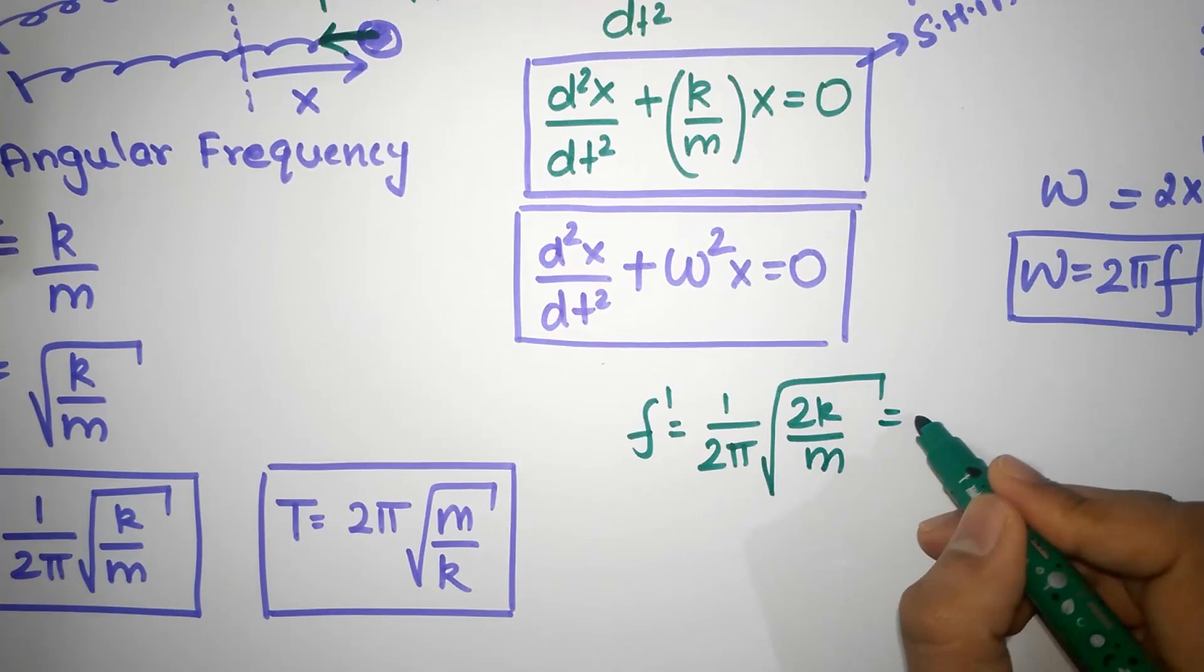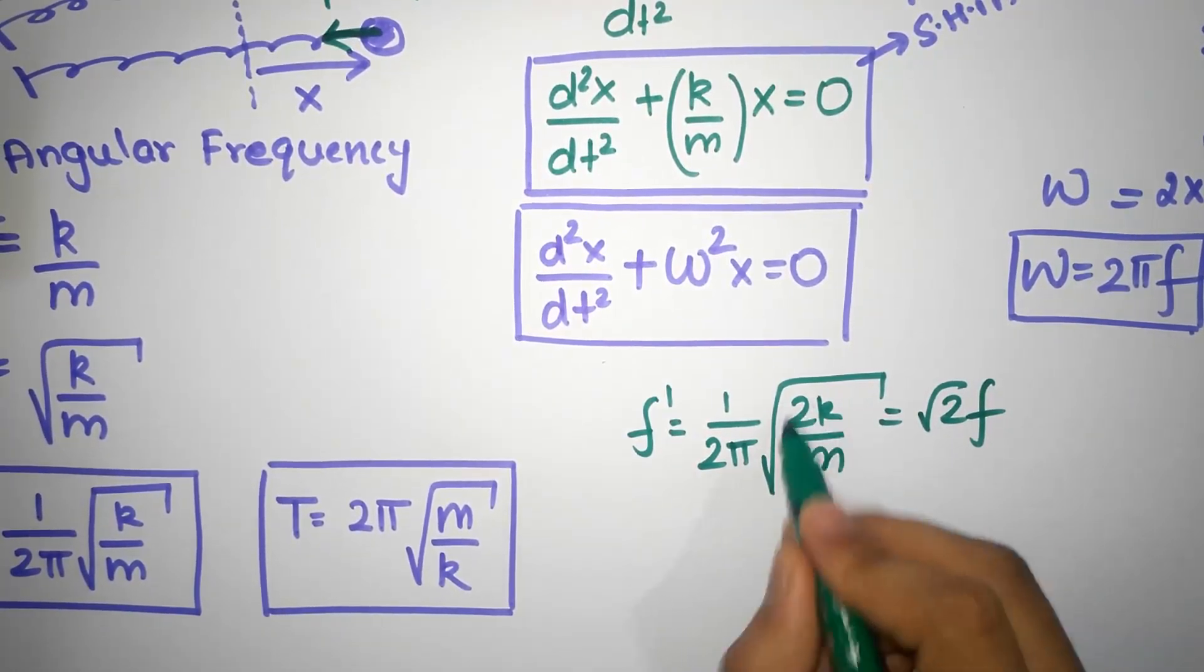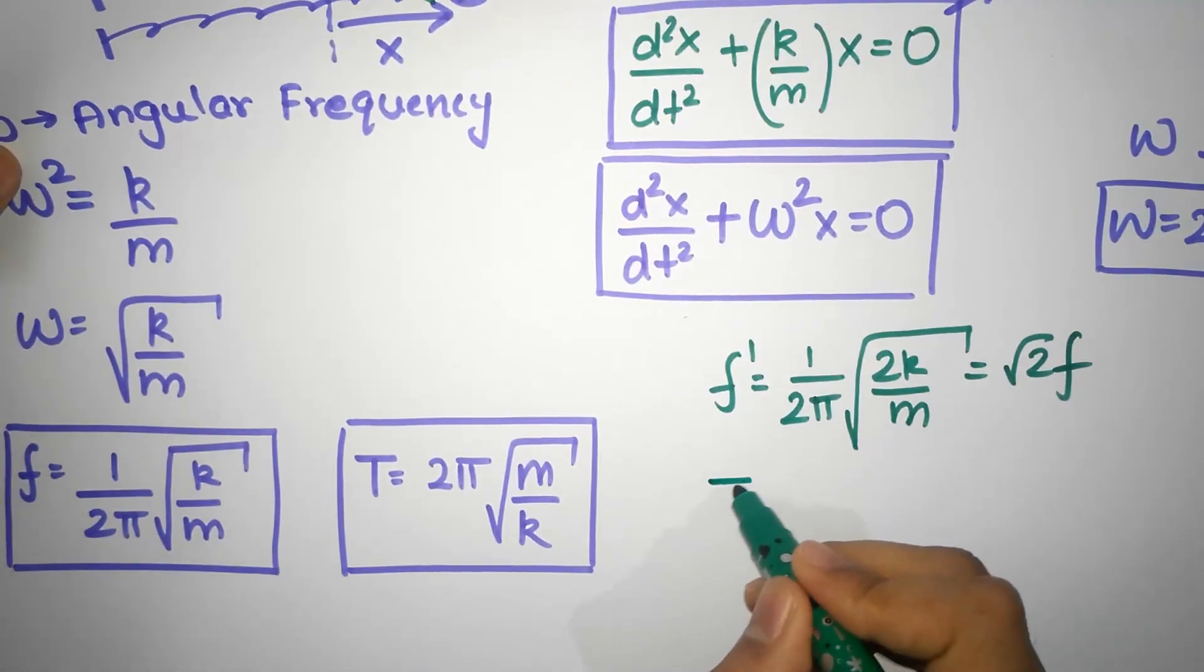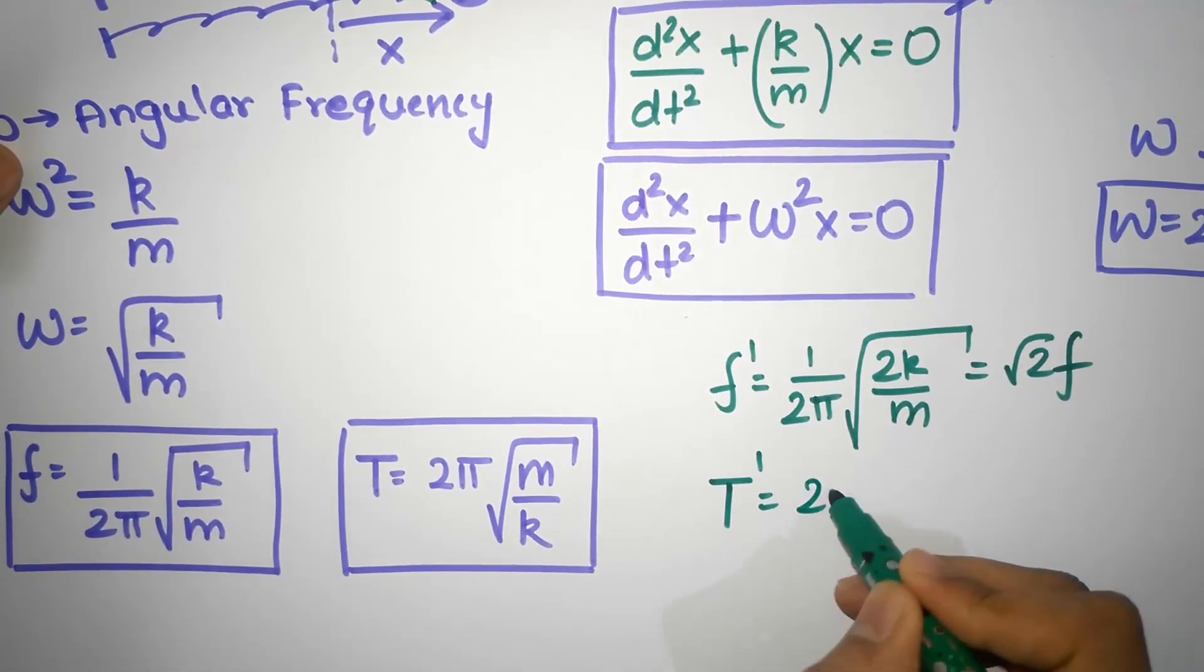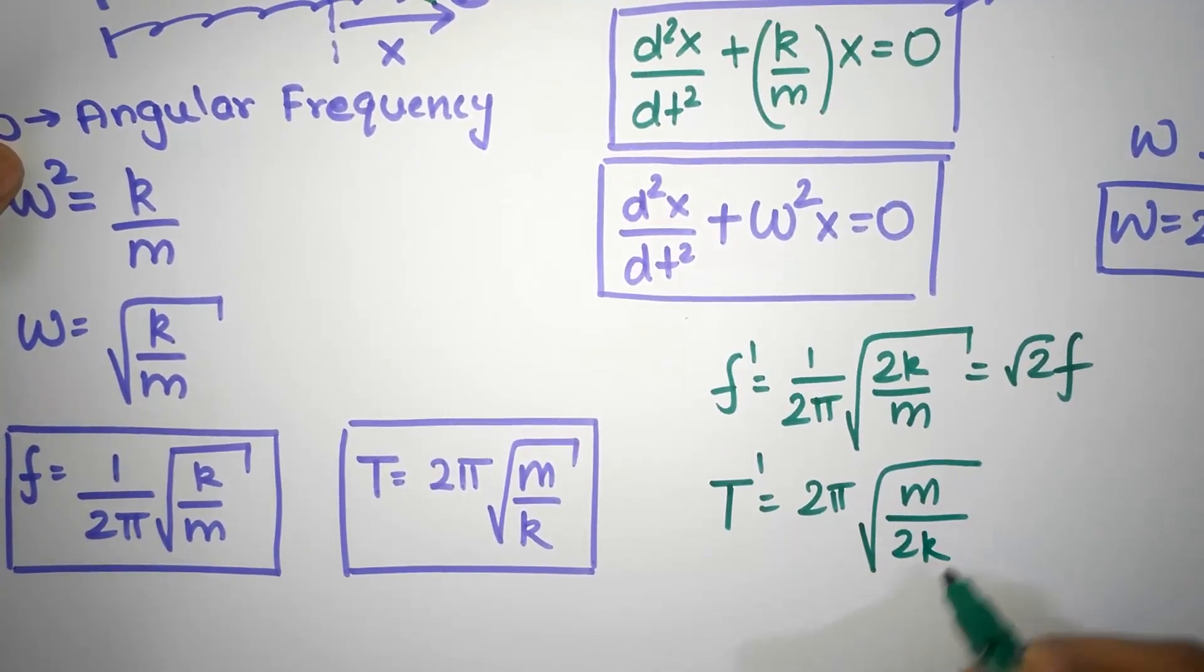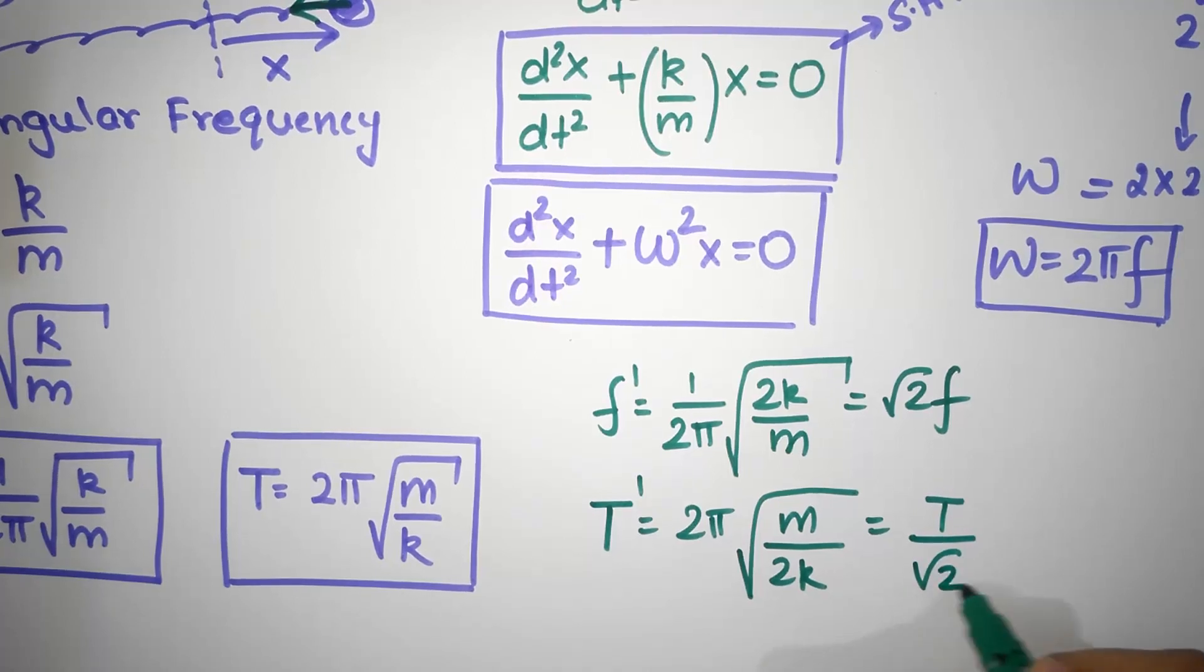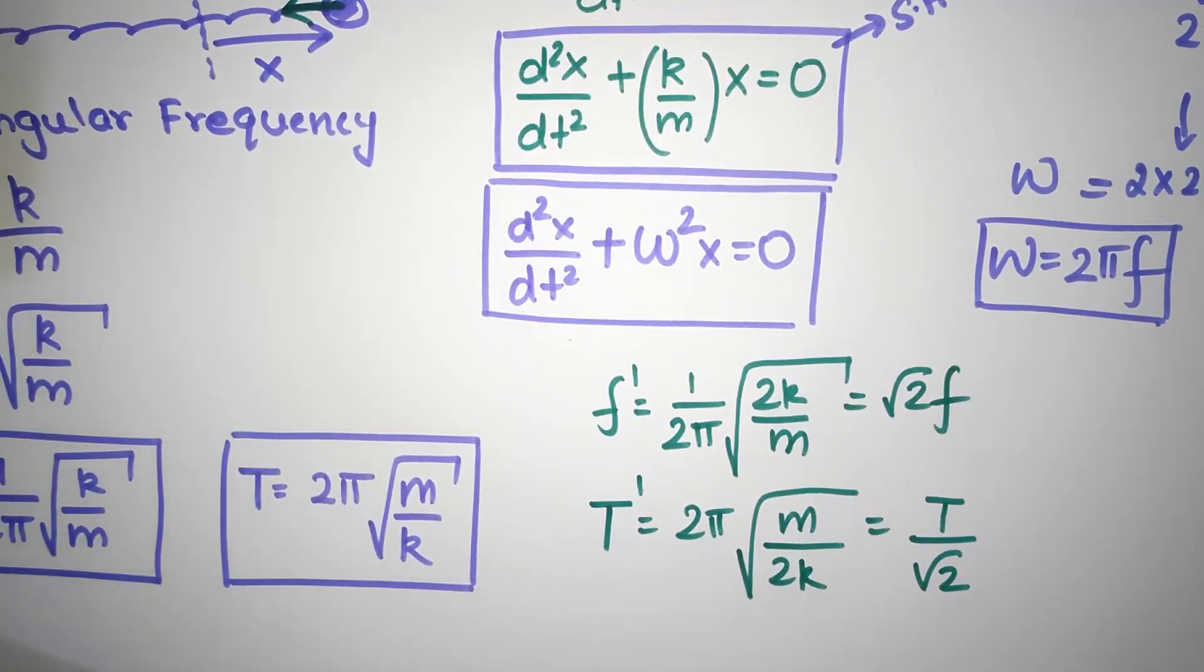And that is root 2 times f, because there's a root 2 extra. Similarly, our new time period is going to be 2 pi square root of m divided by 2k. And so, that's going to be t divided by root 2. And that's our answer. That's what we wanted.